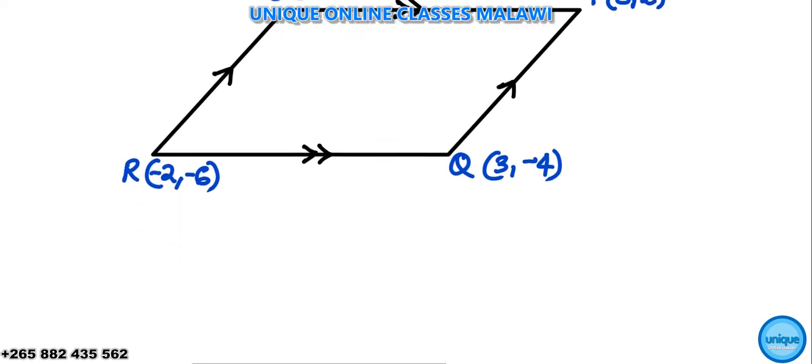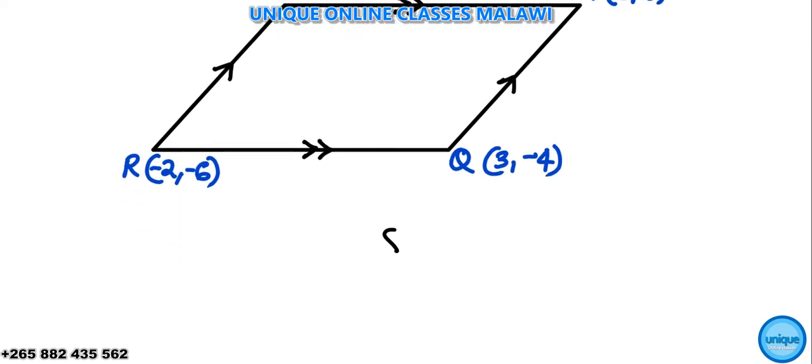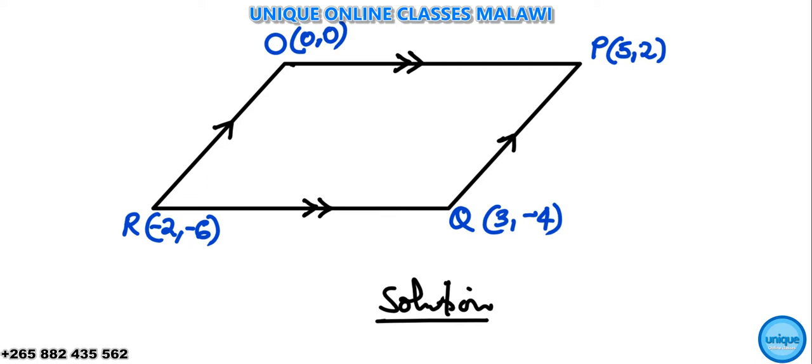Solution: What we're going to do, let me write solution here. To show that this one is a parallelogram, we should be sure using this line and this line, using parallel lines. RO is parallel to QP, so let's show that.